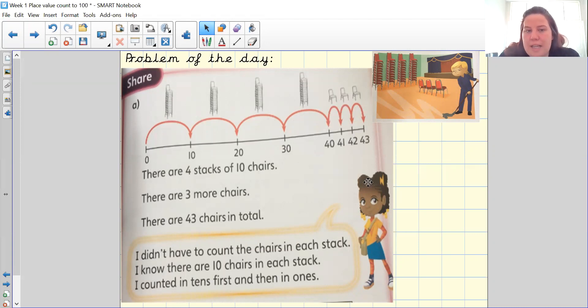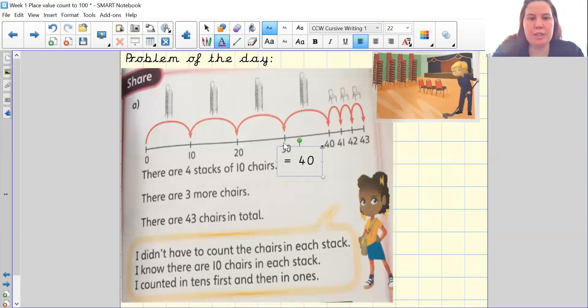I've got four stacks of ten which equals 40. And then I have my three that is left over. So all I need to do is add these two together to make the total 43. We didn't count the chairs in ones. We counted them in tens because it's a lot easier and quicker for us to count.